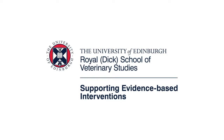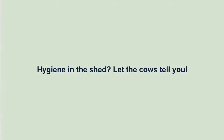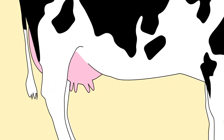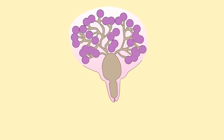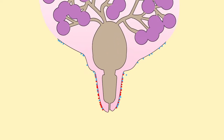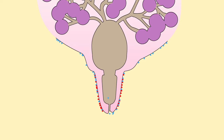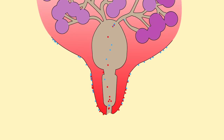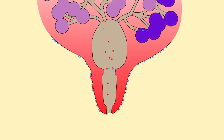Welcome to this series on mastitis in dairy cows, brought to you by the University of Edinburgh. This video is about hygiene in the shed — let the cows tell you. Mastitis is the infection of the milk-producing gland. Bacteria invade the tit end via the tit canal and cause an infection. Mastitis is a fight between bacteria invading and the cow fighting the infection.